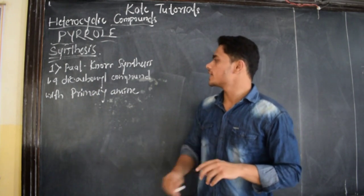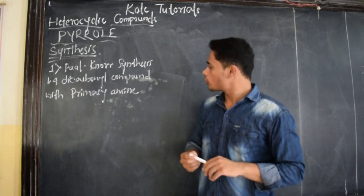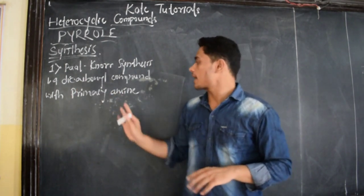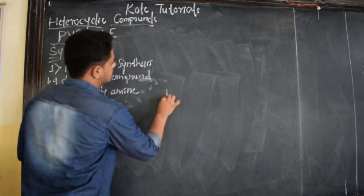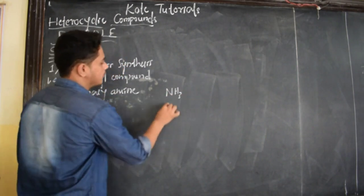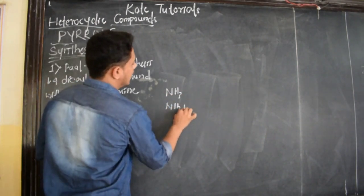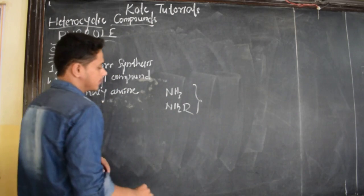Here what we take is 1,4-dicarbonyl compound with primary amine only. We know primary amines are NH2, NH3 is also a primary amine, these two are primary amines.